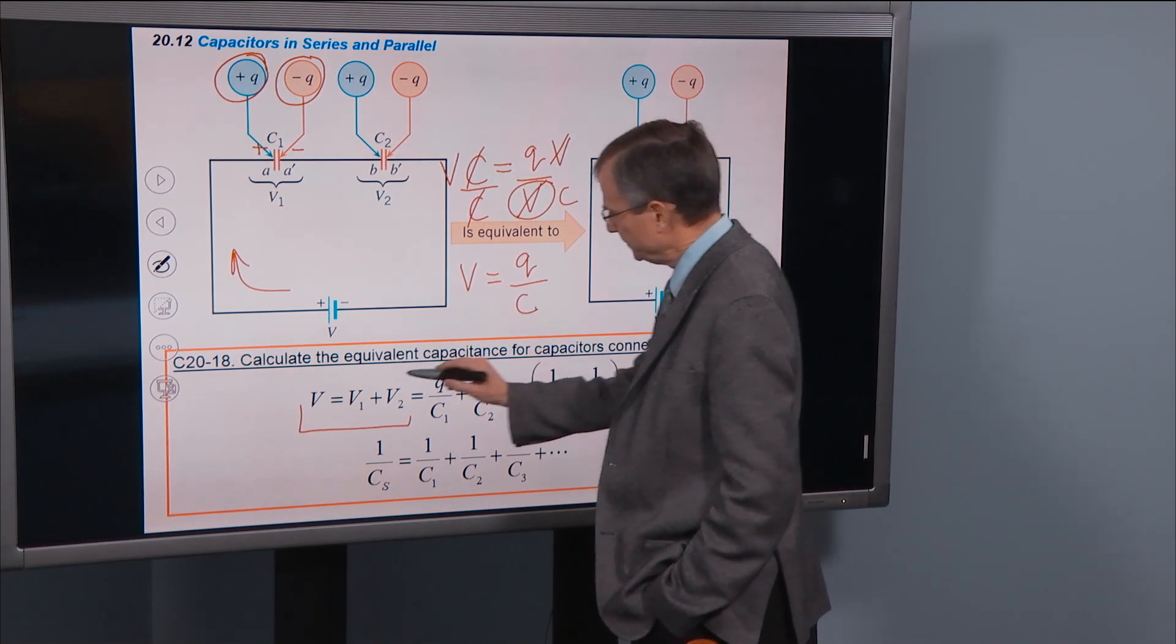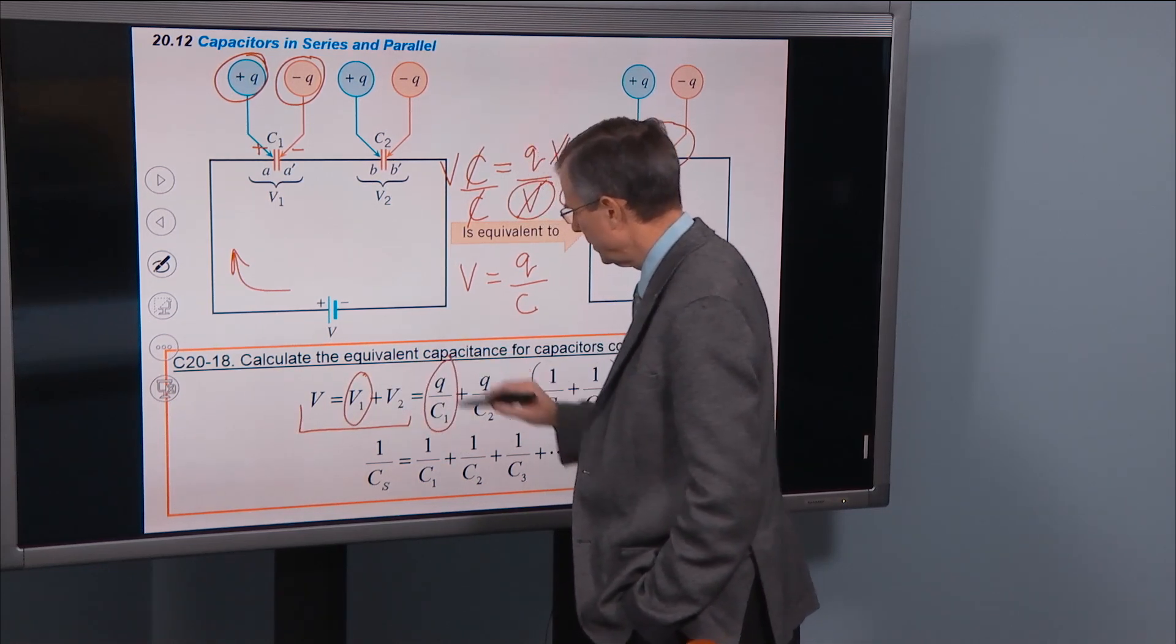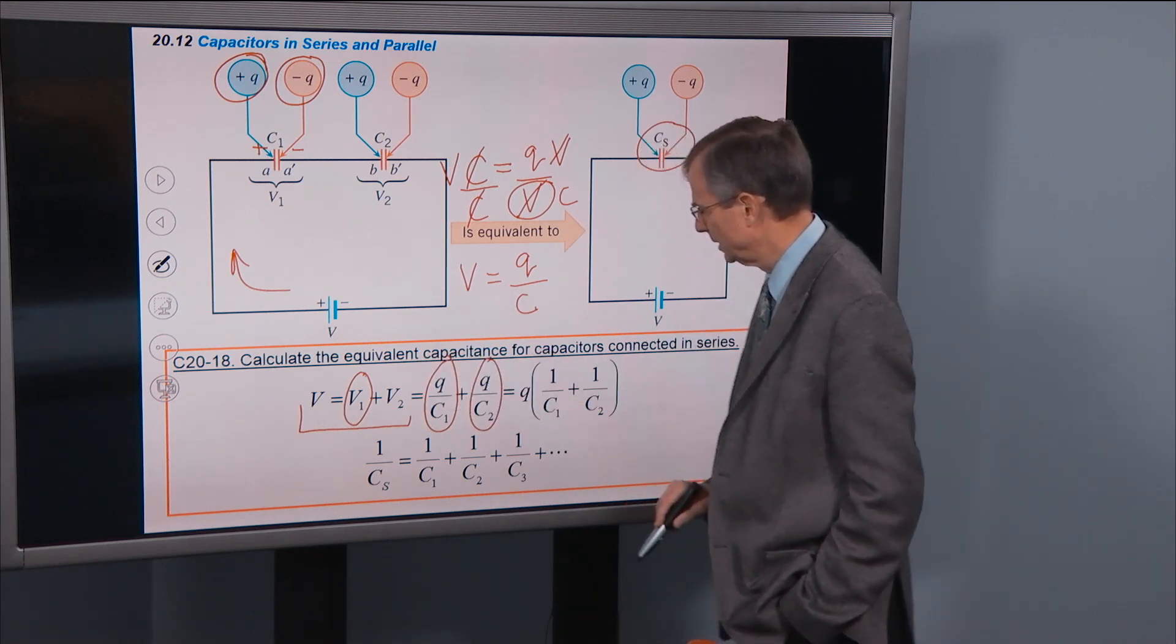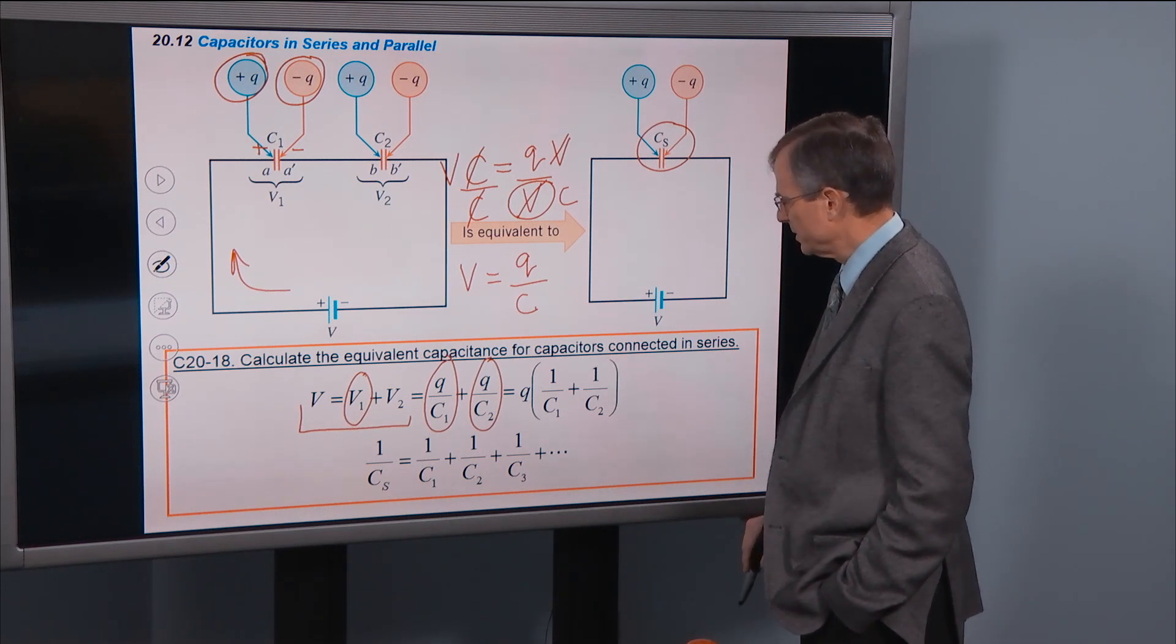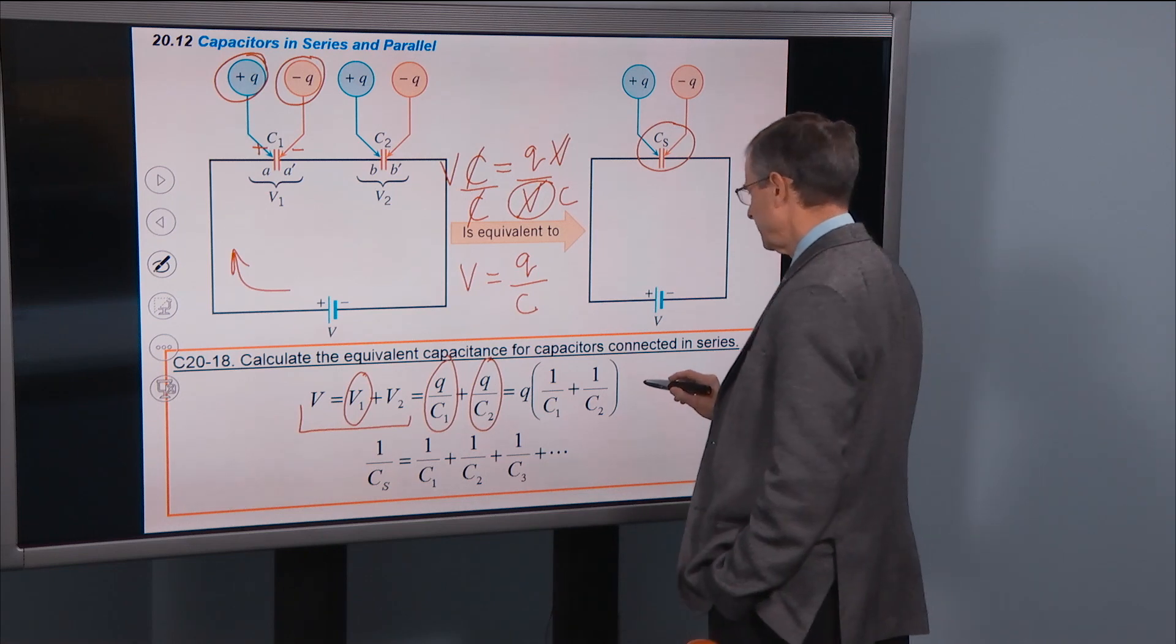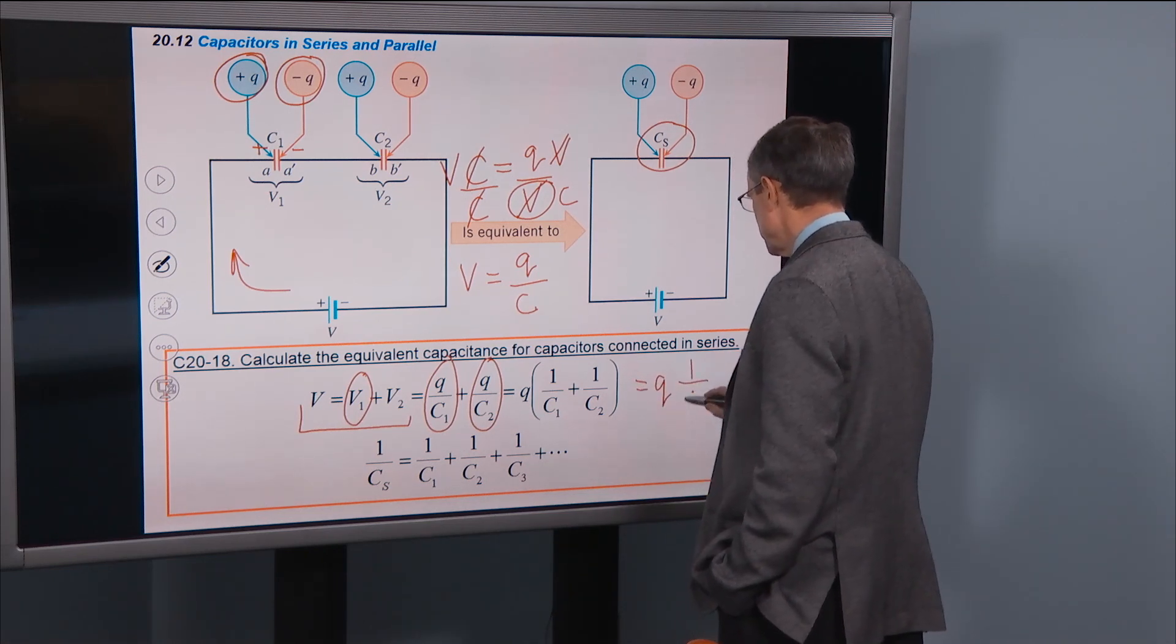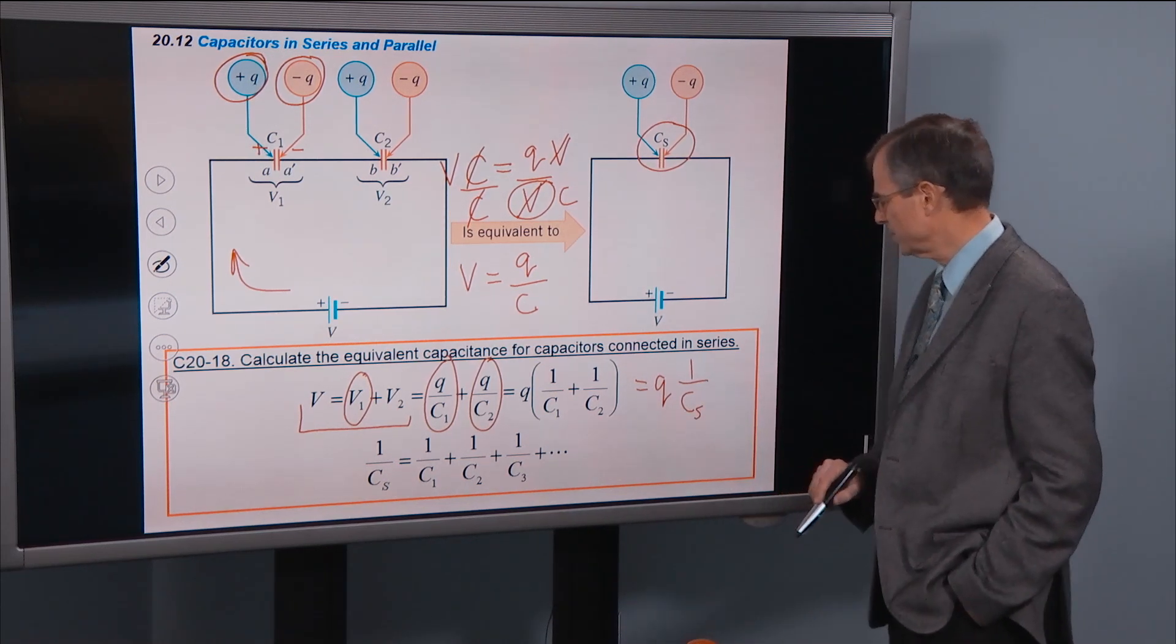So the voltage V1 becomes q over c1, voltage V2 becomes q over c2. We can factor out the q and we get 1 over c1 plus 1 over c2. And that is equal to q times 1 over c, the equivalent capacitance for capacitors in series.